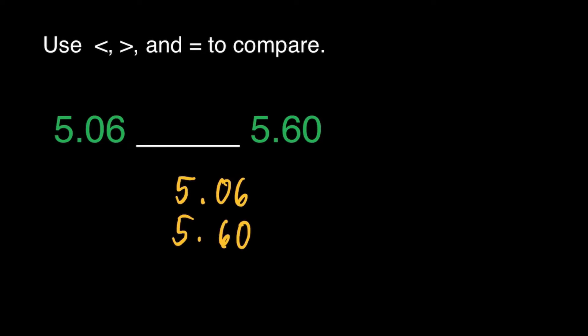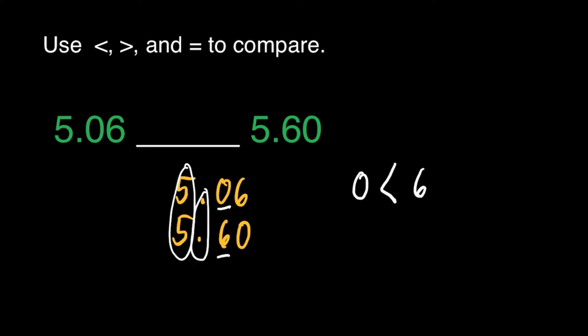In this case, for the whole number part, they have the same number. They're equal, and of course the decimal point. We can see the difference in the tenths place, where the first decimal has 0 and the other has 6. We can tell that 0 is less than 6. That makes our answer less than. We can say that 5 and 6 tenths is less than 5 and 60 hundredths.